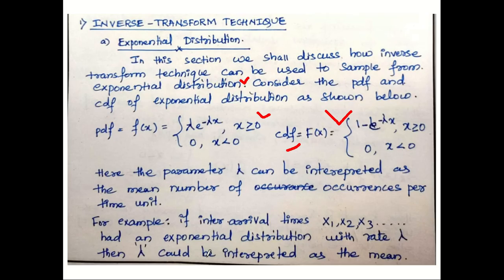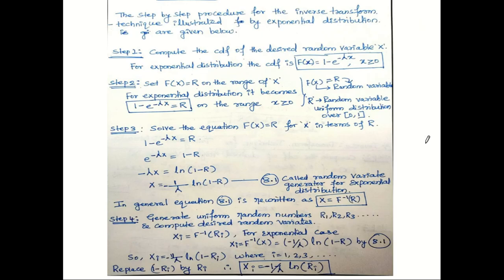Let us first understand the inverse transform technique for exponential distribution. We will discuss how the exponential distribution is used by the inverse transform technique to generate random variates. This particular equation shows the PDF of an exponential distribution, and this is the CDF of the exponential distribution.